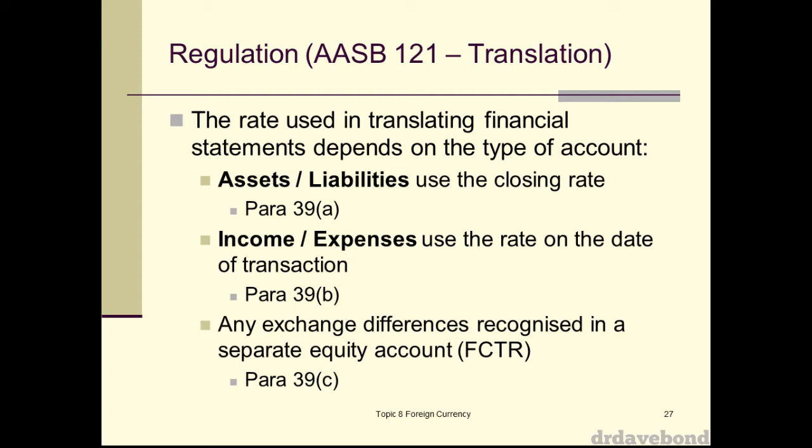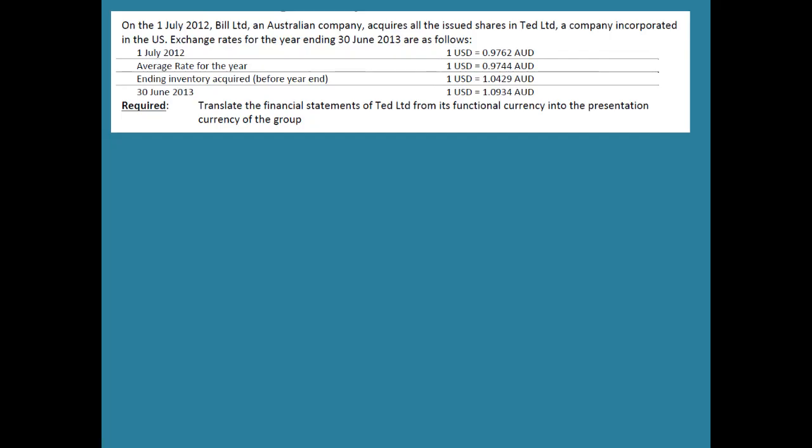Based on that, we can look at the third and final demonstration. The company was acquired on 1 July 2012; we have information as at 30 June 2013. We have exchange rates at the start of the year, at the end of the year, an average rate, and a rate for when the ending inventory was acquired — so a bunch of different exchange rates to work with.